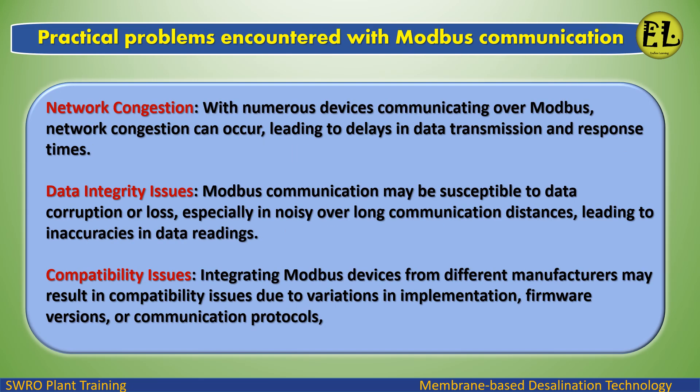Practical problems encountered with Modbus: Network congestion — with numerous devices communicating over Modbus, network congestion can occur, leading to delays in data transmission and response times. Data integrity issues — Modbus communication may be susceptible to data corruption or loss, especially in noisy or long communication distances, leading to inaccuracies in data readings.